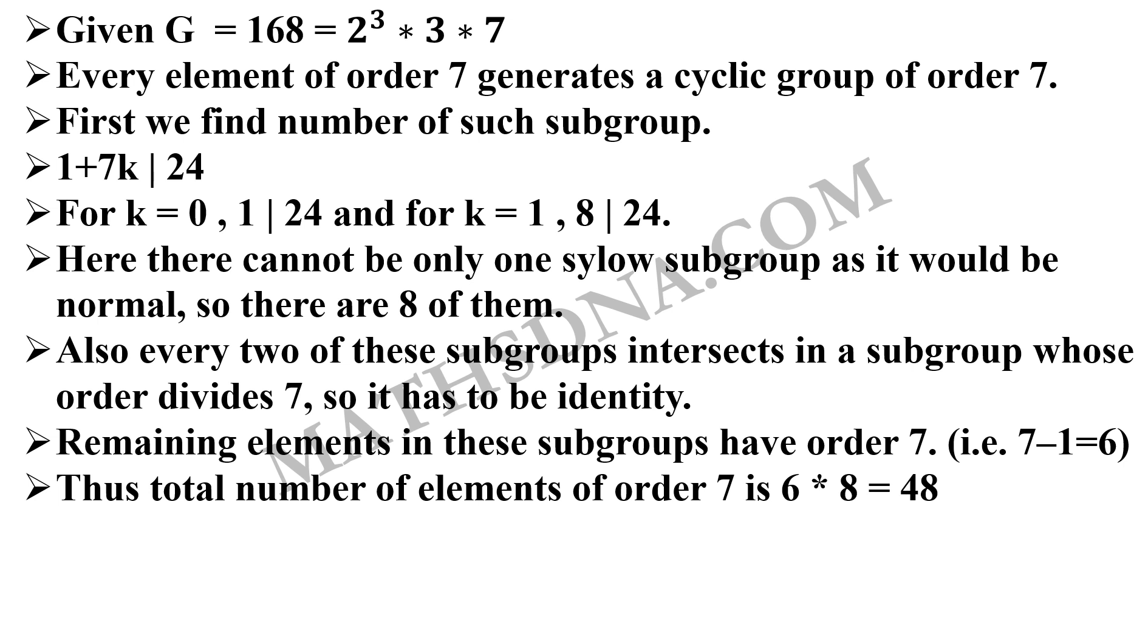And thus total number of elements of order 7 will be 6 × 8. That will be 48. That is option C.